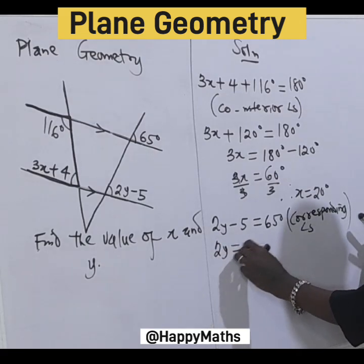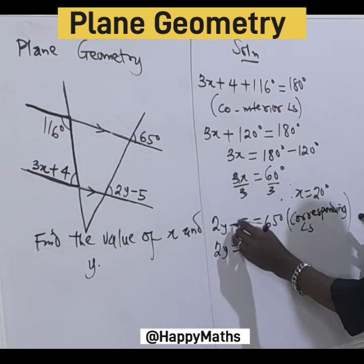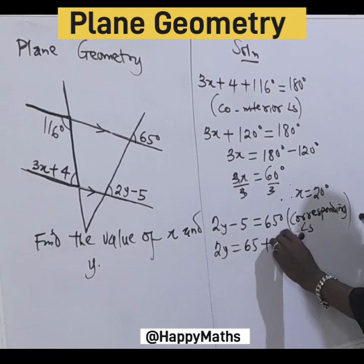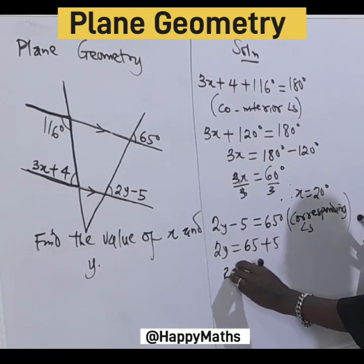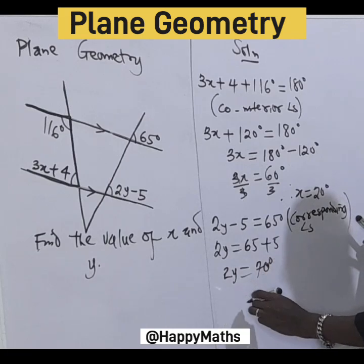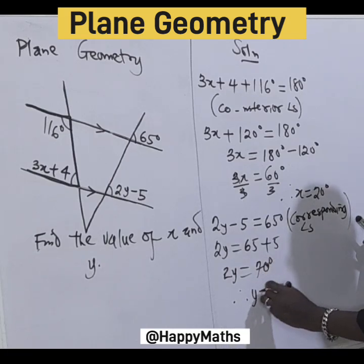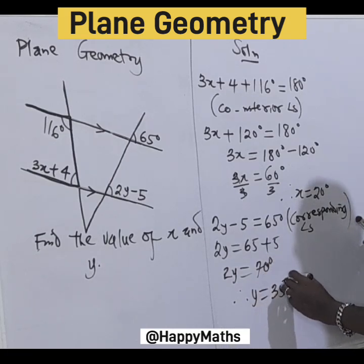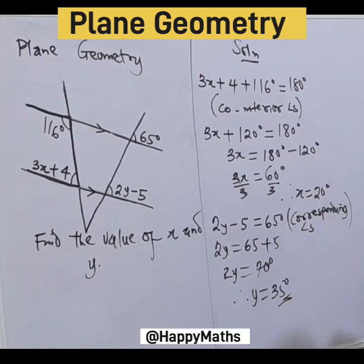Let's transpose negative 5 to be positive. 2y = 65° + 5 = 70°. Divide both sides by 2, which gives us y = 35°. That is the answer.